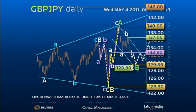Further weakness though than 128 would suggest a C equals 1.618 of A target of 125.50, coinciding with the previous pre-spike low.